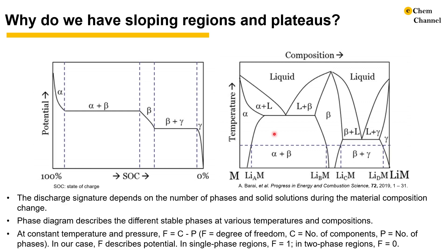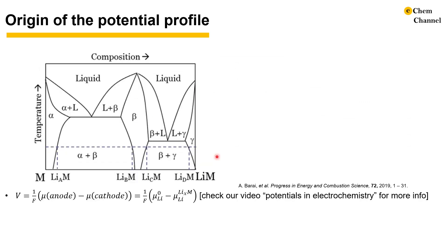Next, we will discuss the origin of the potential profile. Potential of a battery is determined by the difference of chemical potential of the two electrodes over Faraday's constant for lithium insertion compounds. The chemical potential difference can be described by the difference of chemical potential of lithium in the respective phases. Assuming we have lithium metal as the anode, which is noted as μ_Li^0. The chemical potential of lithium in the insertion compound is expressed as μ_Li^LiXM. If you want to learn more about this equation, please refer to our video Potentials in Electrochemistry.